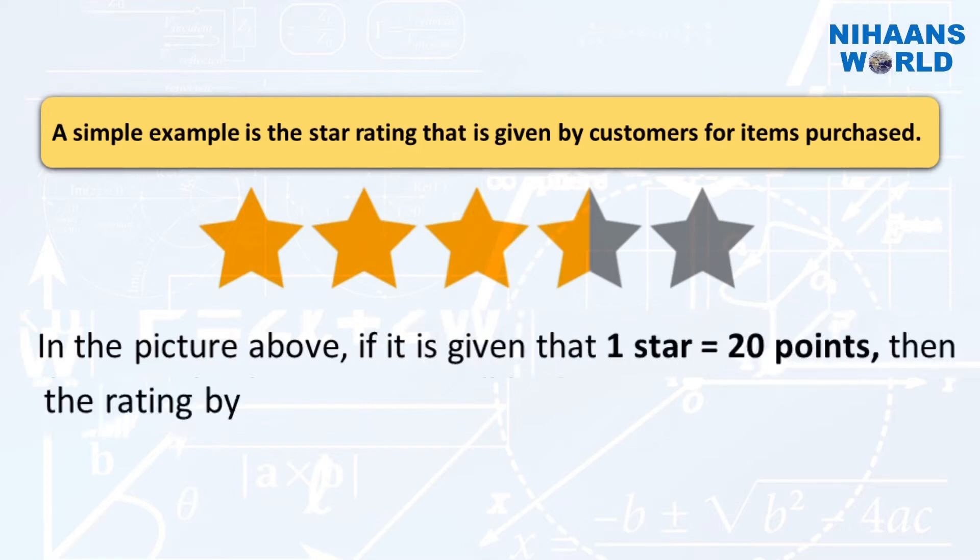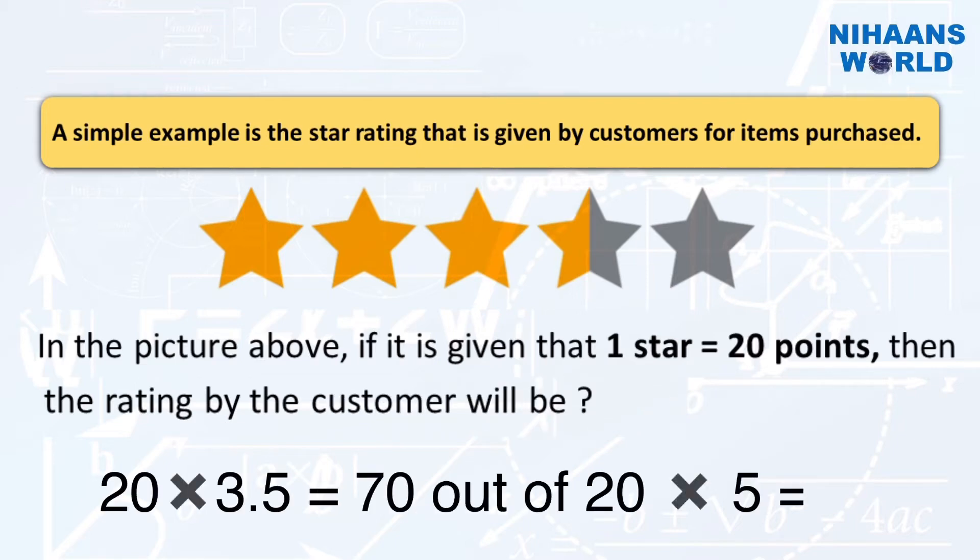20 multiplied by 3.5 equals 70 out of 20 multiplied by 5 equals 100.